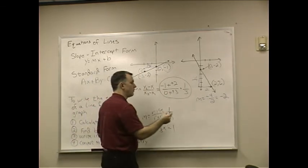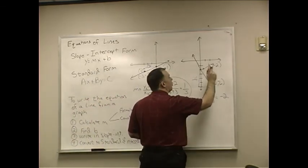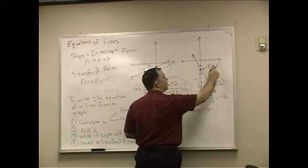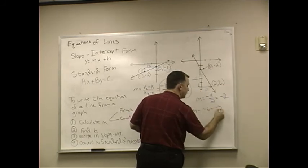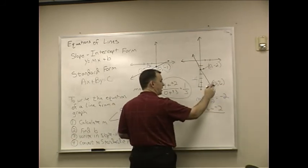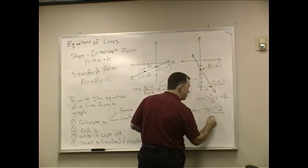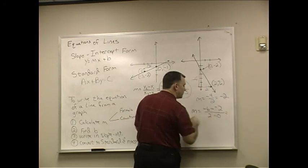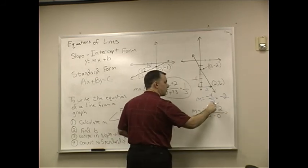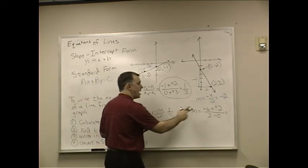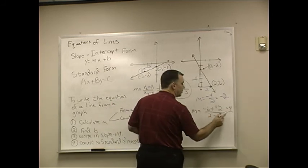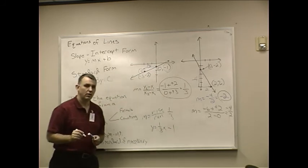So, if I put it into my formula, m equals y2, which would be negative 6, minus y1, which would be negative 2, over x2, which would be 2, minus x1, which would be 0. We've got a double negative in a row here, so that becomes plus. Negative 6 plus 2 is negative 4. 2 minus 0 is 2. Negative 4 over 2. There's my negative 2 again.